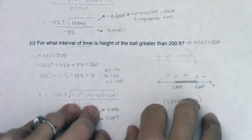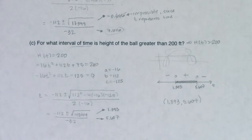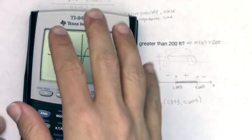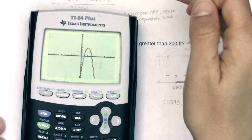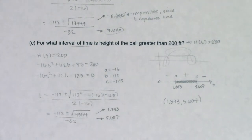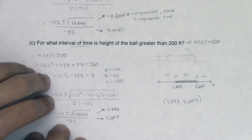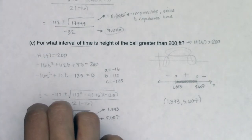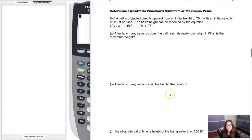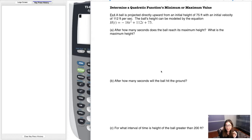Now I'll flip over to my computer and show you how your calculator's graph screen can do all of parts A, B, and C for you. I haven't used the y-equals or graph screens yet. Your calculator can get the answer — that's awesome — but I'll still want to see the work. It's just a great option for checking your numbers. Let's take a look at example four with our calculators.